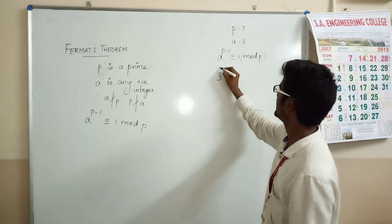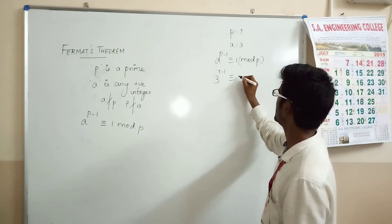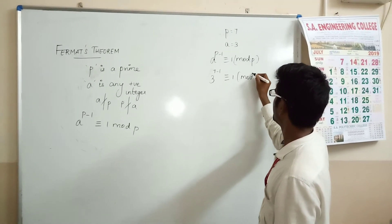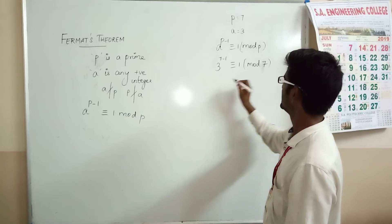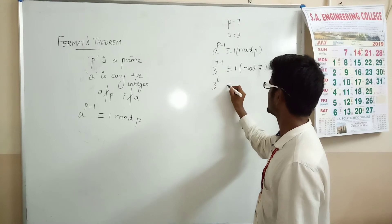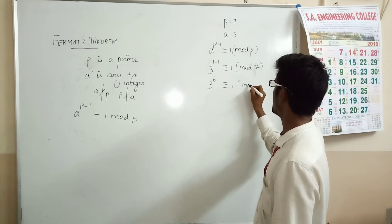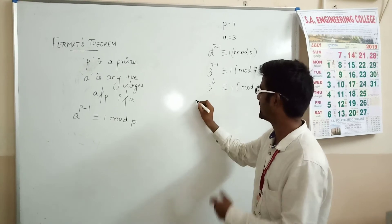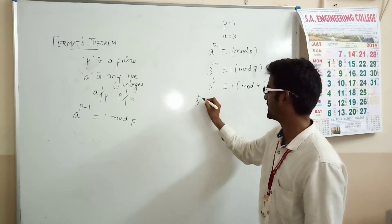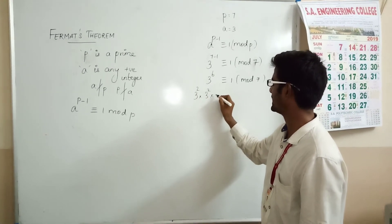3^(7-1) is congruent to 1 mod 7. Value of p here is 7. So 3^6 is congruent to 1 mod 7. I am rewriting 3^6 as 3^2 × 3^2 × 3^2.